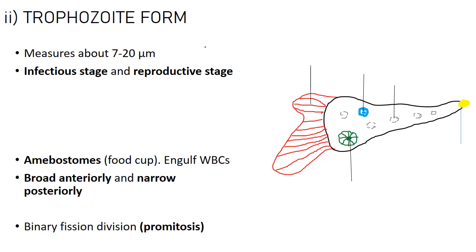The trophozoite form measures about 7 to 20 micrometers. It is the infectious and reproductive stage. It contains a structure known as a food cup or amoeba storm, used to engulf food substances such as white blood cells. When the trophozoite senses nearby food, its ectoplasm forms a pseudopodium around the food — forming the food cup — and the food is stored in food vacuoles. The cell is broad anteriorly and narrow posteriorly.